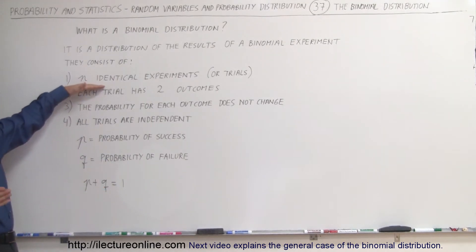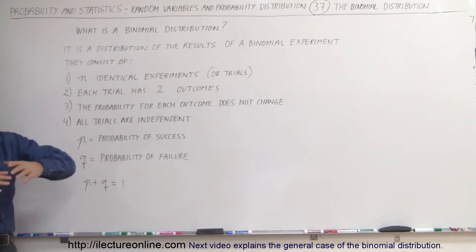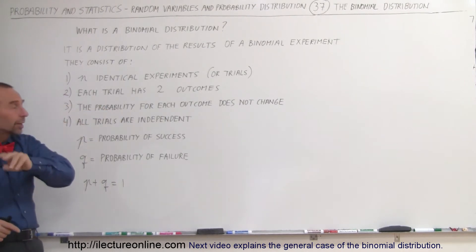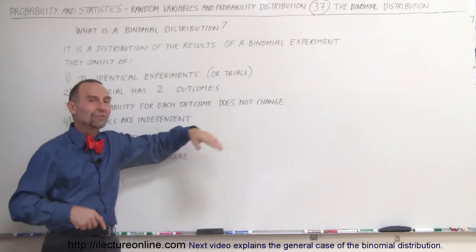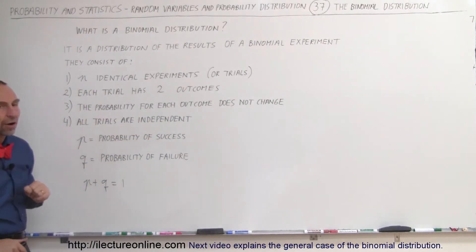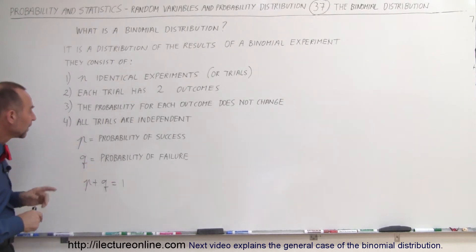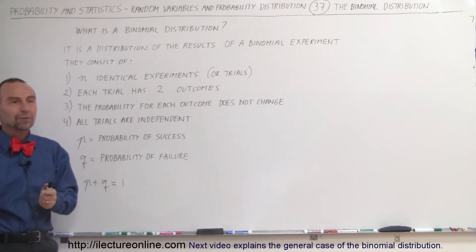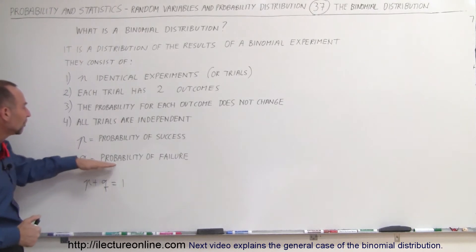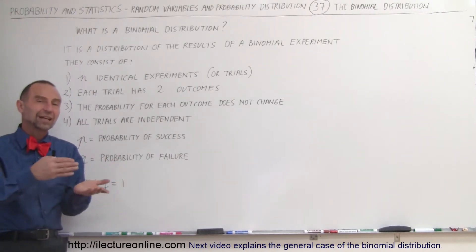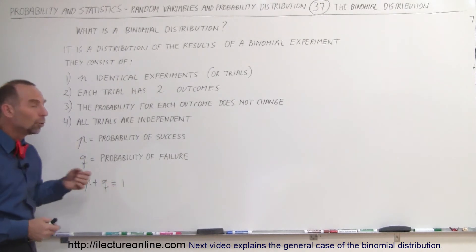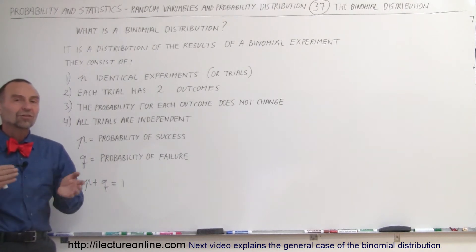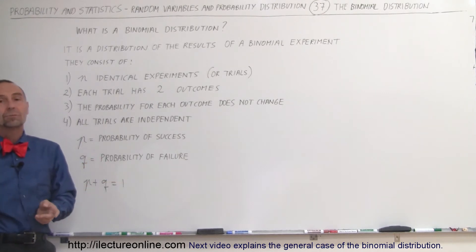So to summarize: there are n identical experiments — n could be a small number like two or three, or a large number like a thousand or a million. Each trial only has two outcomes. The probability for each outcome does not change from trial to trial. All trials are independent. We use the variable P as the probability of success — for example, heads would be success — and Q is the probability of failure, so tails would be failure. The two combined always must add up to one, though they don't have to be equal. The probability of one could be 0.9 and the other 0.1.